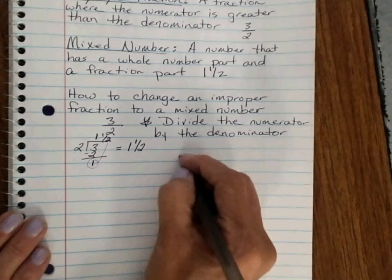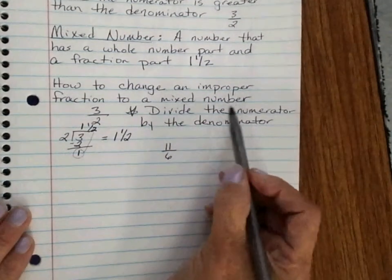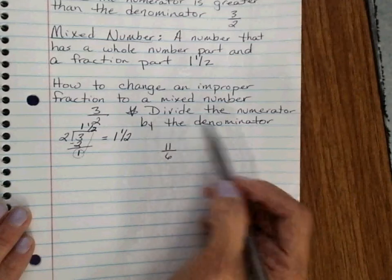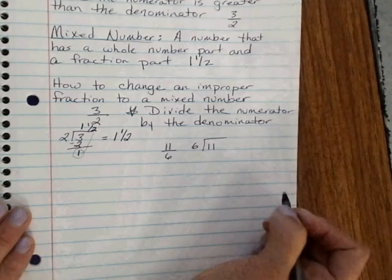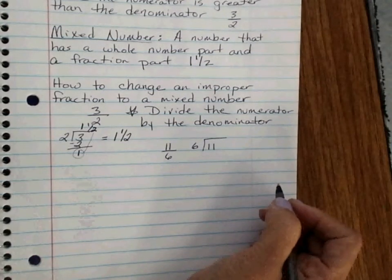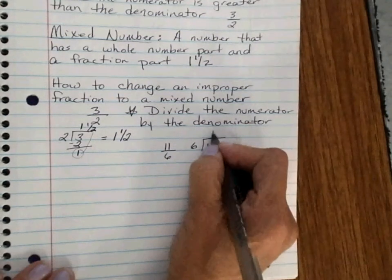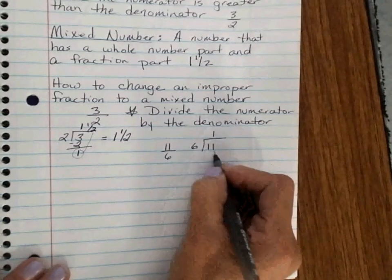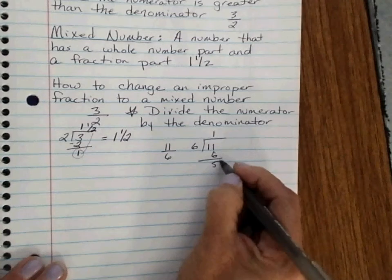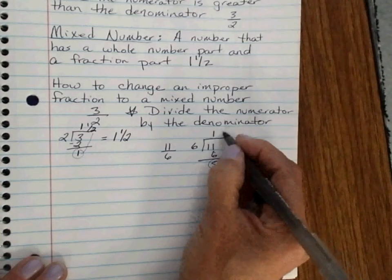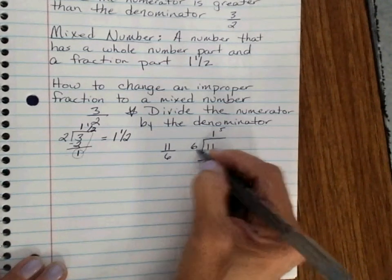Let's have out this one. 11 over 6. I'm going to divide the numerator by the denominator. My numerator is 11 divided by 6. How many groups of 6 fit into 11? Just 1. 1 times 6 is 6. Subtract. 11 minus 6 is 5. So now 5 becomes the numerator of the fraction for the mixed number. And my divisor here is 6.